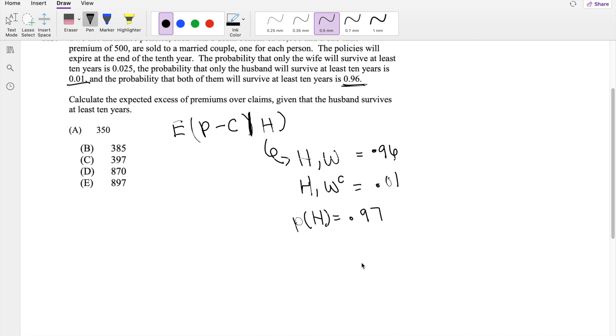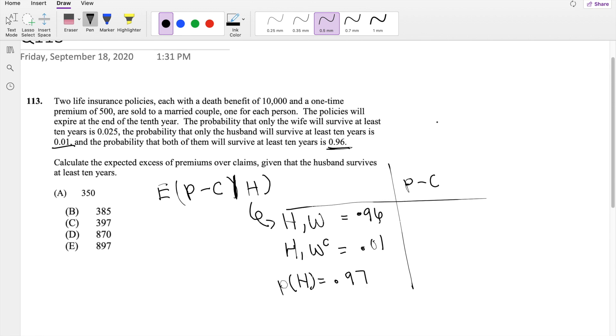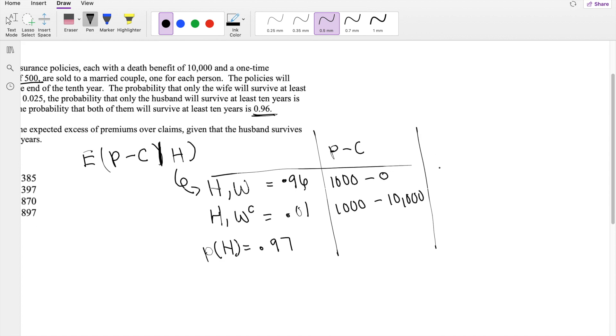So if you're looking at conditional probability, I'm going to draw a little T-chart. So what would the P minus C be? Premium for everyone is going to be 1,000 because there's two of them and it costs 500 each. So premium is 1,000 minus claim. If both of them survive, they're not going to get anything in claim because no one died. But however, if the wife dies, you get $10,000 here. So then the actual P minus C value here is going to be 1,000 and here is going to be negative 9,000.